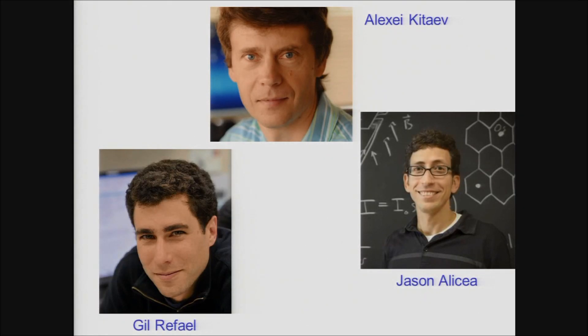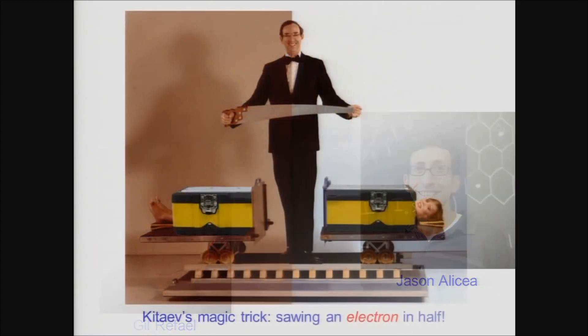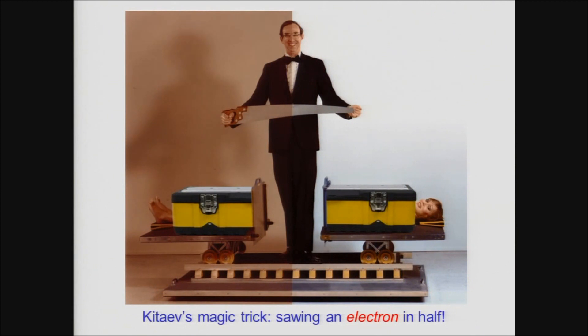Alexei again started the ball rolling with a very stunning idea some time ago. He pointed out that it's possible under the right circumstances for an electron in a wire to split into two parts. For an electron in effect to be sawed in half.